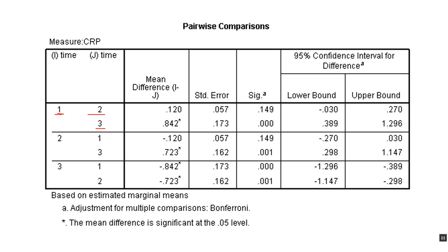For instance, time point one could be a pre-test, two could be after one week of training, and three after two weeks of training. Between the pre-test and one week of training there's no significant difference on the dependent variable. However, after two weeks of training there is a significant difference at p = .0001. Is there a difference between one week and two weeks of training? Yes, also at p = .0001. That's how you interpret post-hoc tests in a within-subjects design.